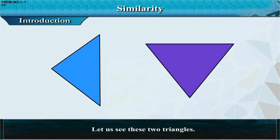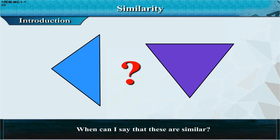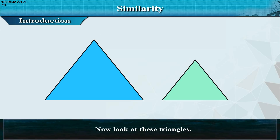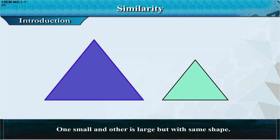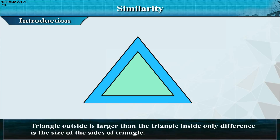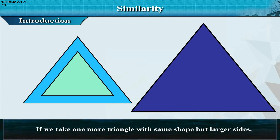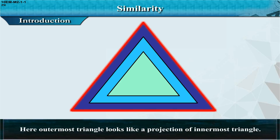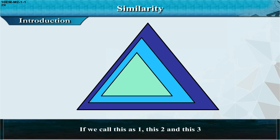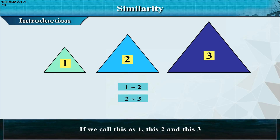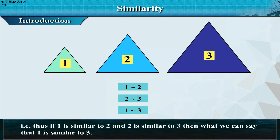Can we say triangles are also similar? Let us see these two triangles — when can we say they are similar? If they have the same shapes. Some triangles don't seem similar in shape, hence those two are not similar. Now look at these triangles — one small and one large but with the same shape. If you put them together, the outer triangle is larger than the inner triangle; the only difference is the size of the sides. You can put these triangles one inside the other. If we call them one, two, and three: one is similar to two, two is similar to three, and also one is similar to three.